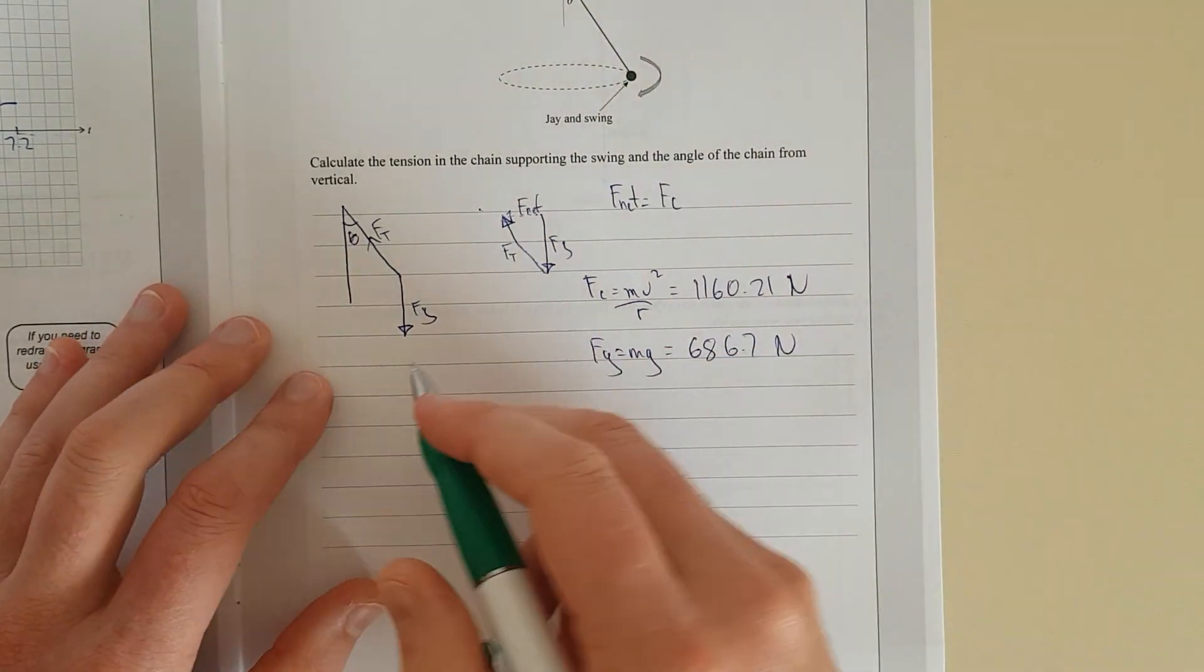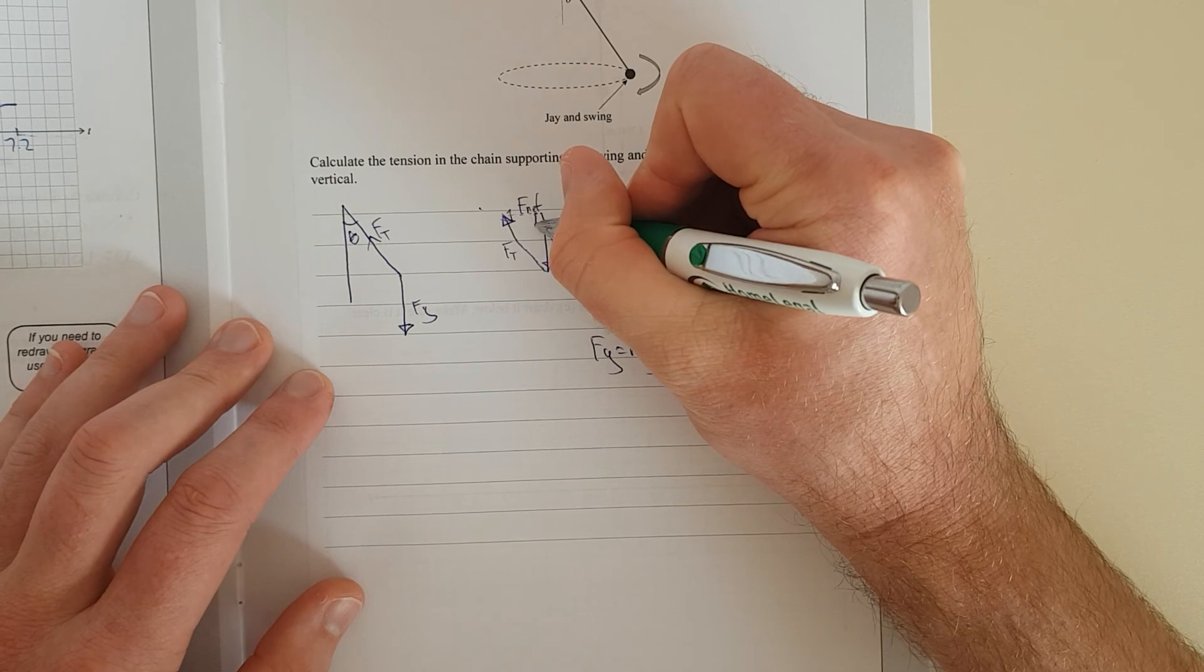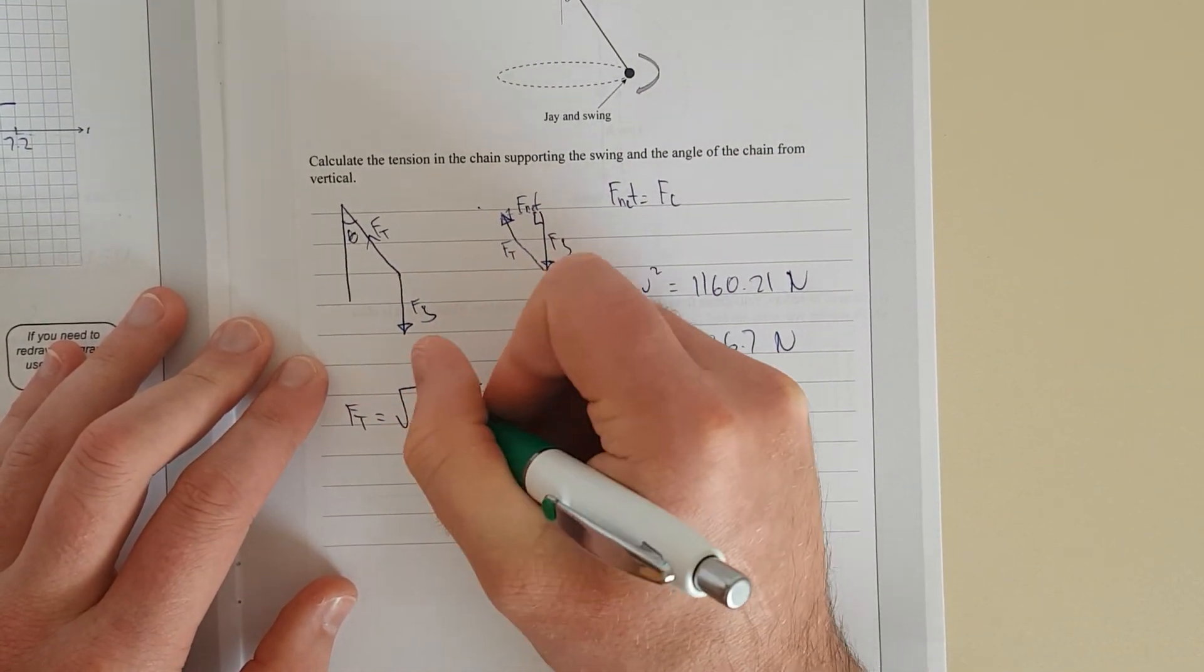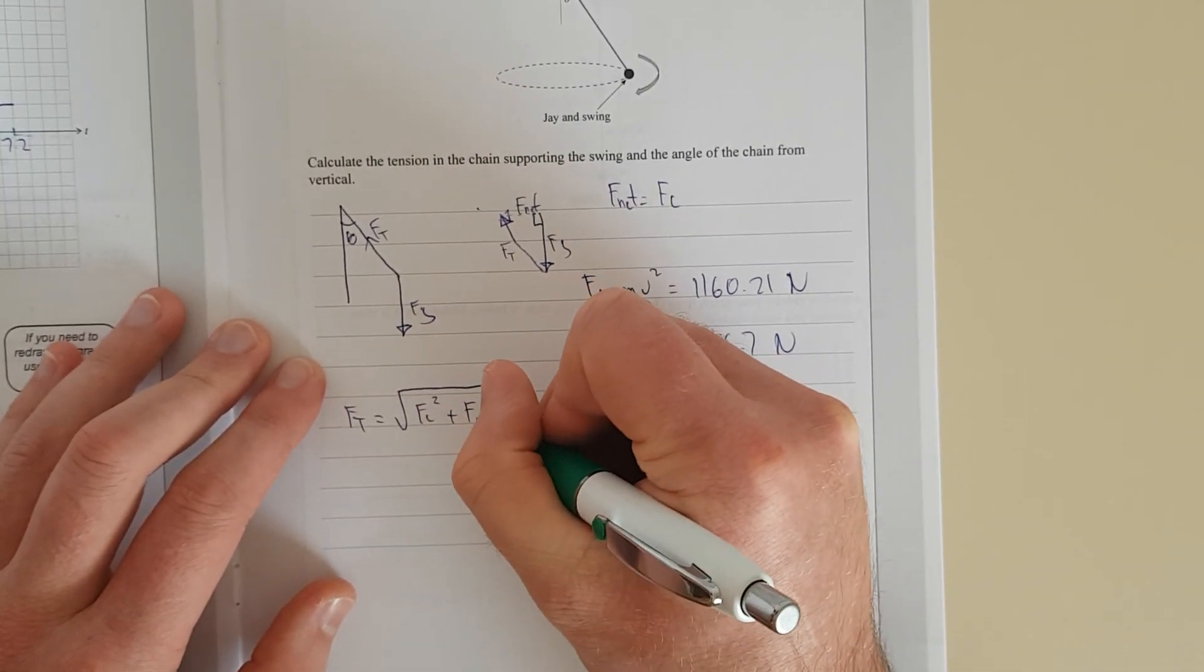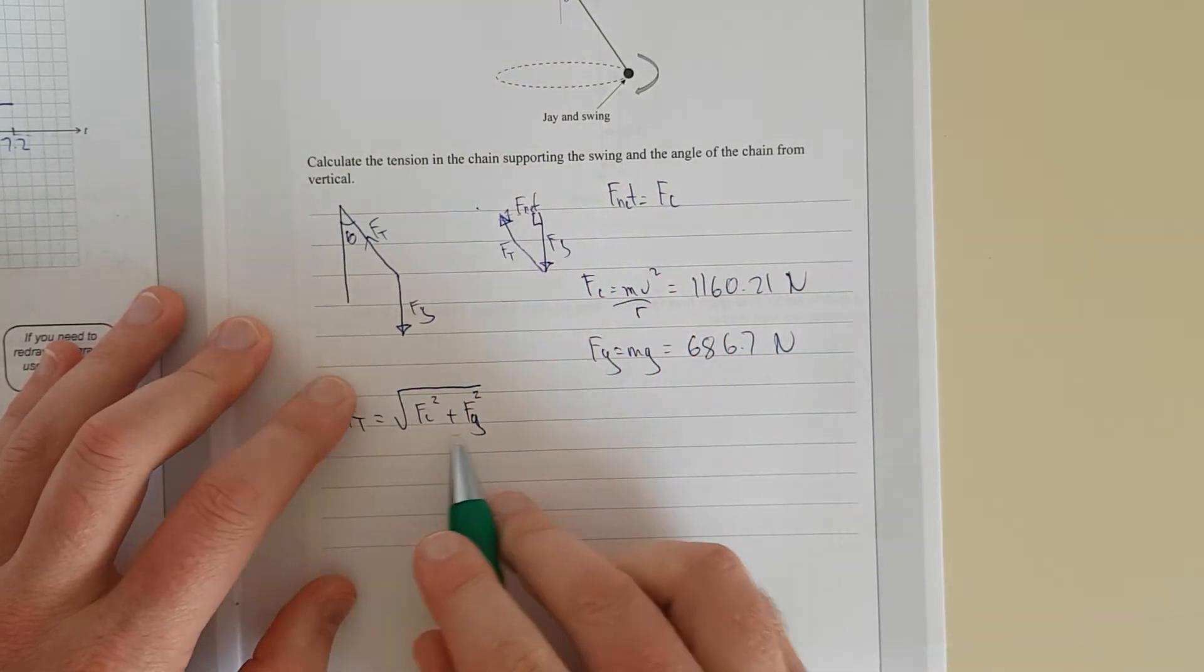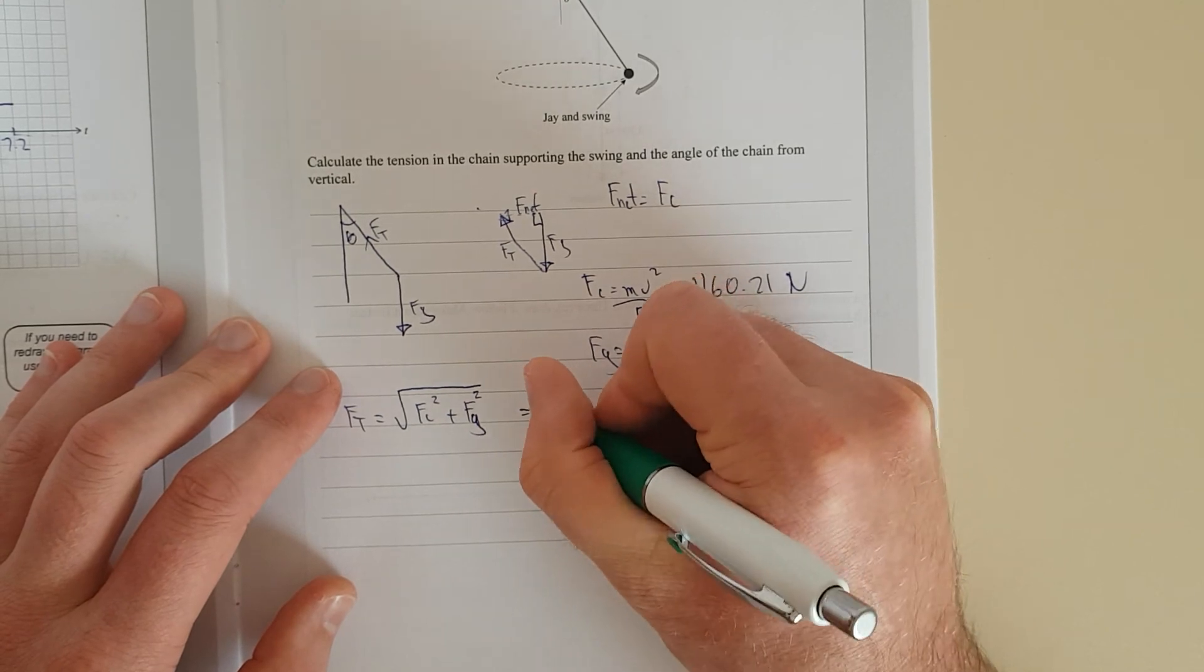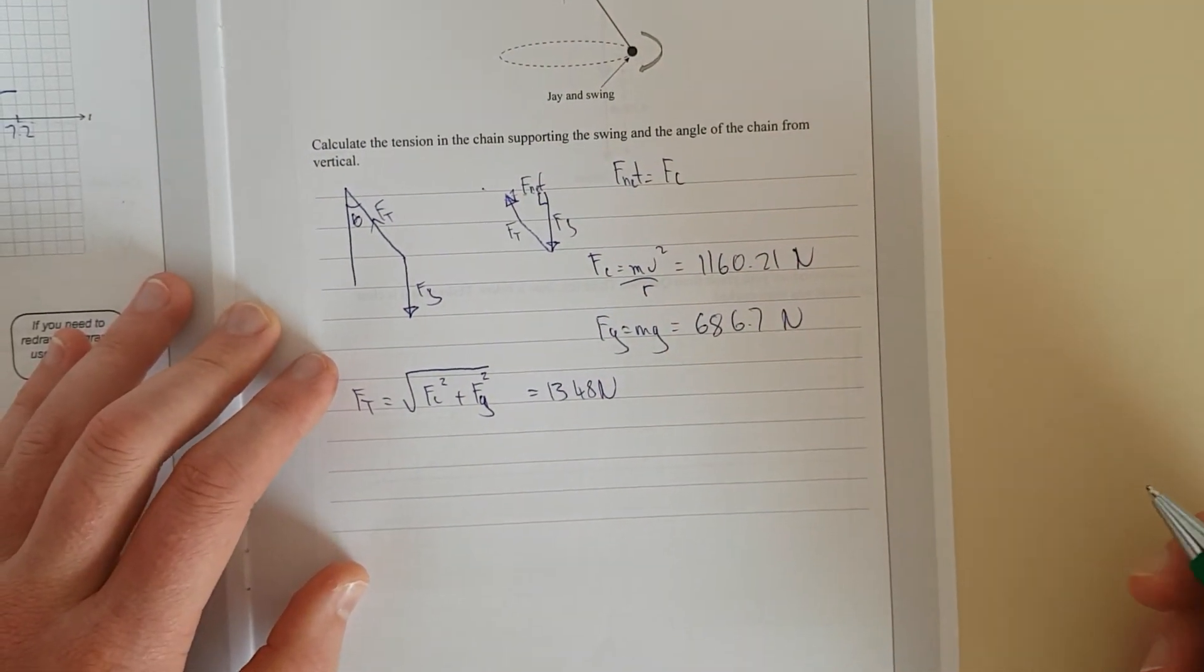And we can see here that's a right angle triangle. Because this here is a right angle. We're going to have T is equal to the square root. Just Pythagoras rearranged. Fc squared plus Fg squared. Because we've got those two. We've figured them out right here. And that equals 1348 newtons. And it's asking for the angle as well.